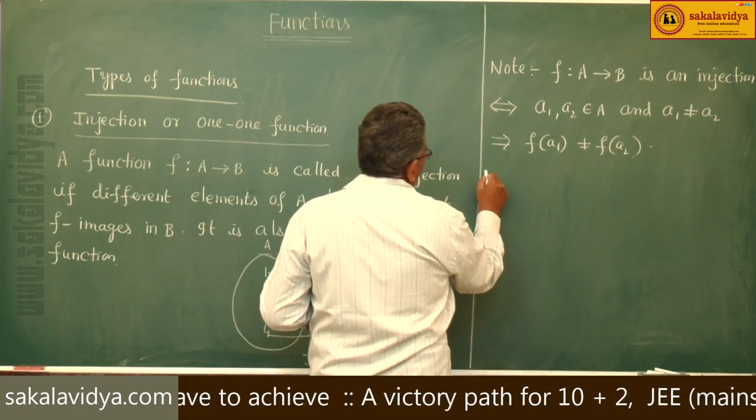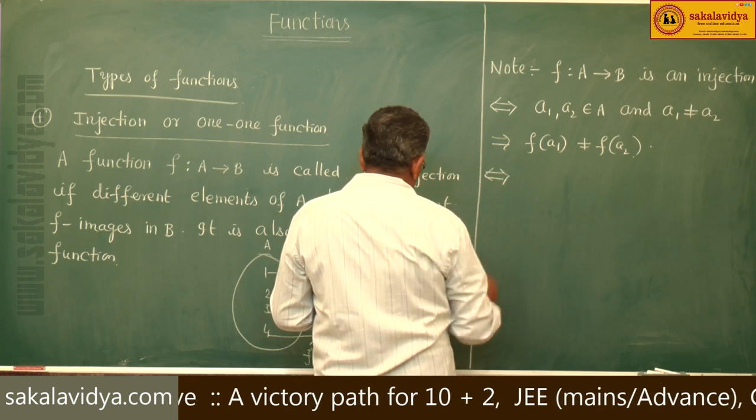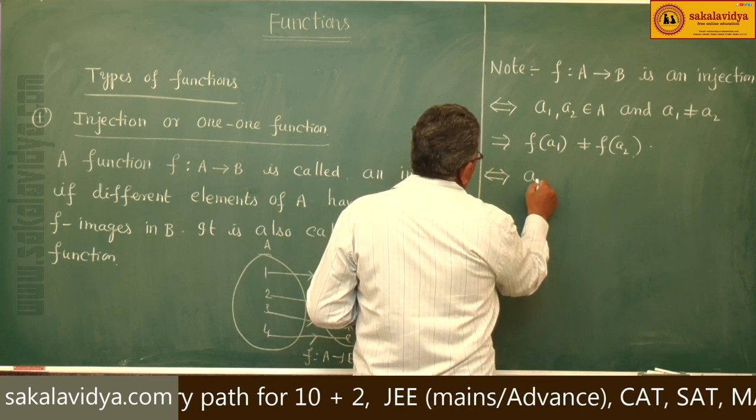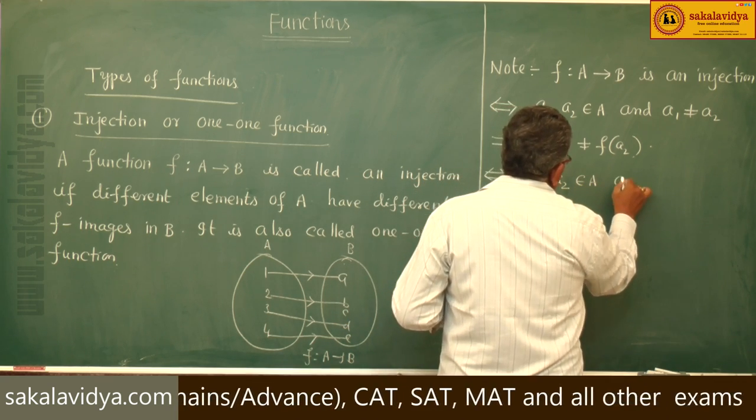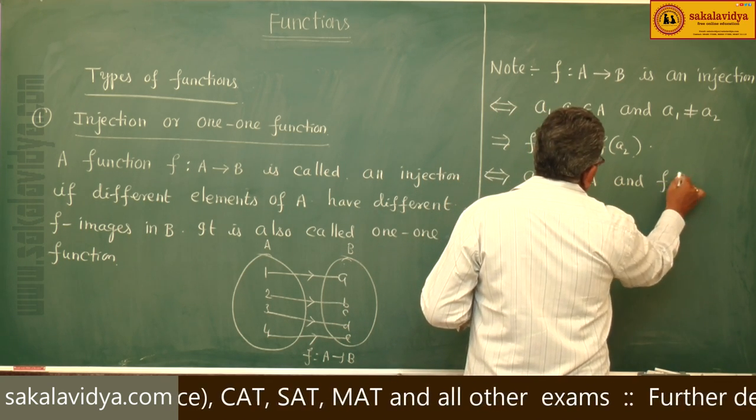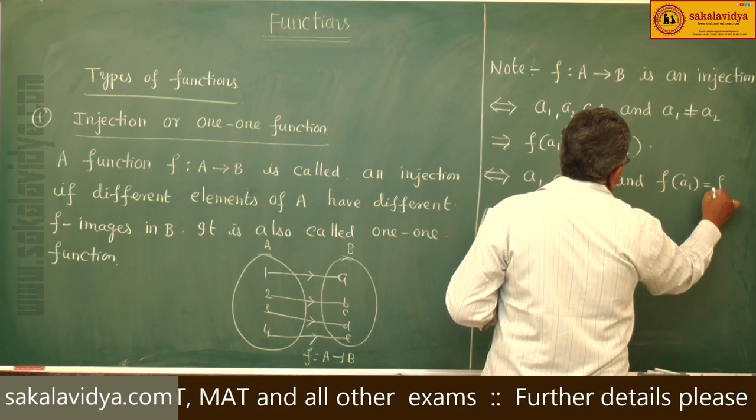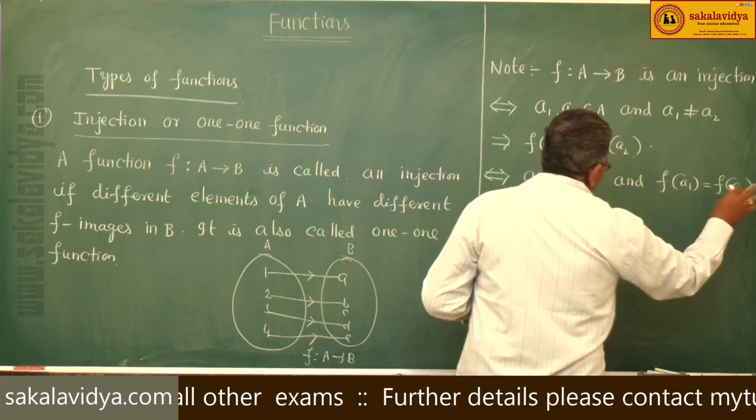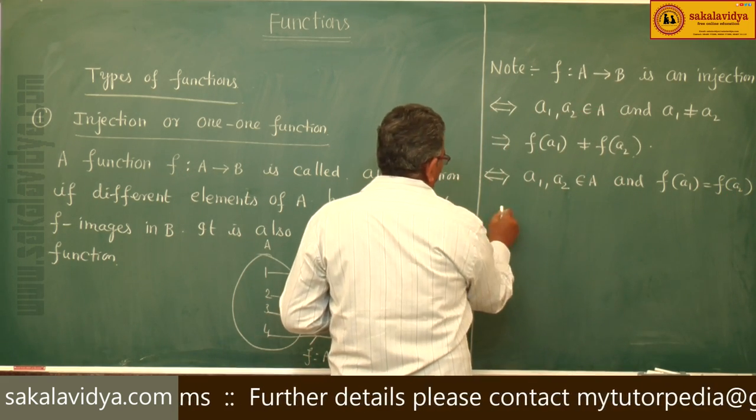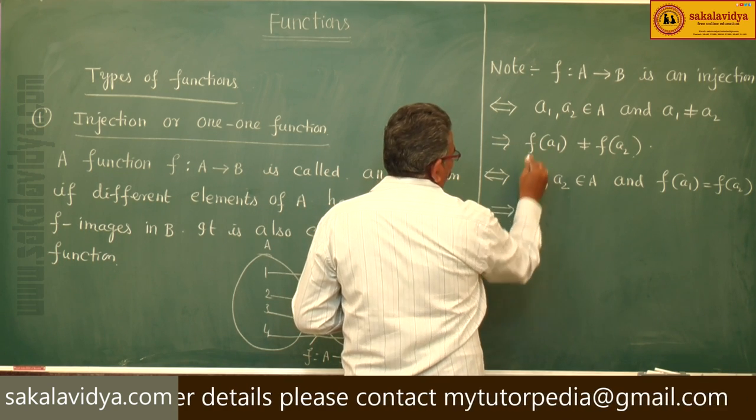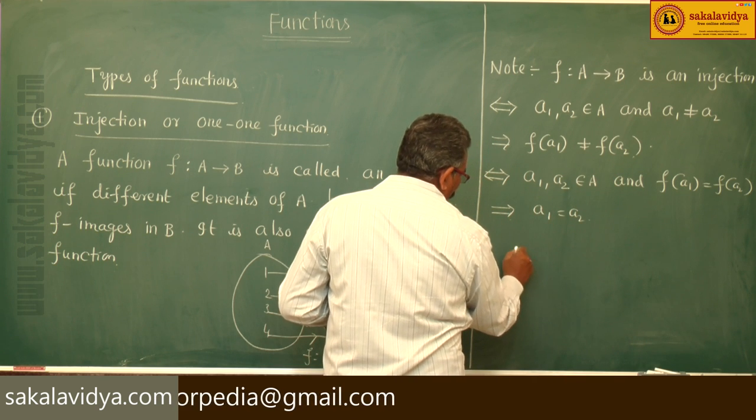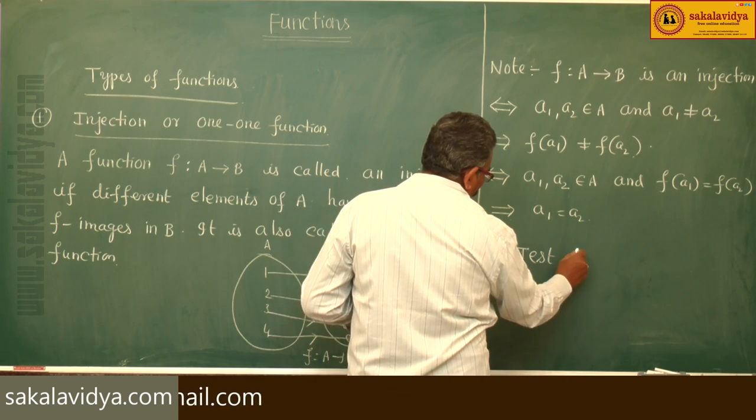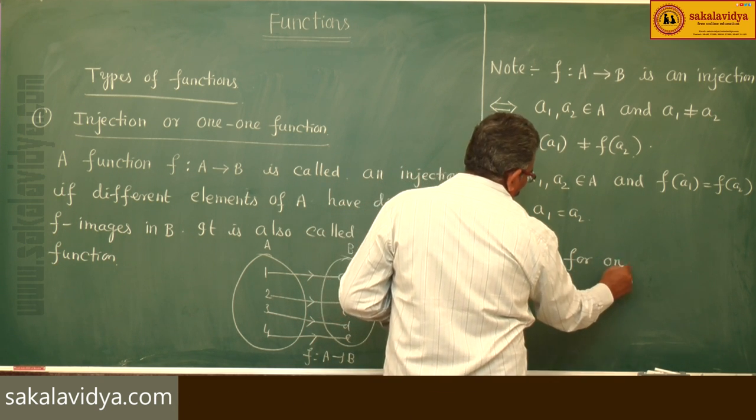Or in another way, a1, a2 belong to A and f(a1) equals f(a2). If the images are the same, the elements must be the same, meaning a1 equals a2. This is also known as the test for one-to-one function.